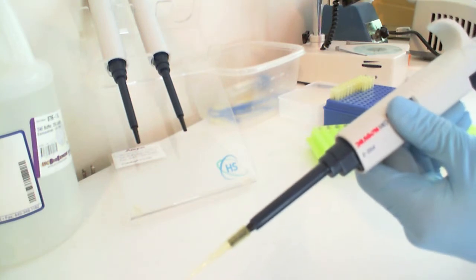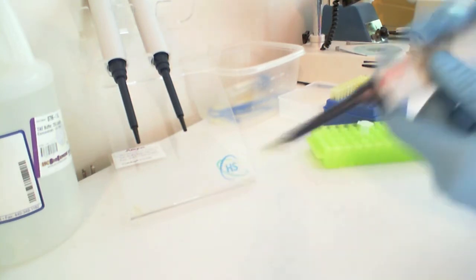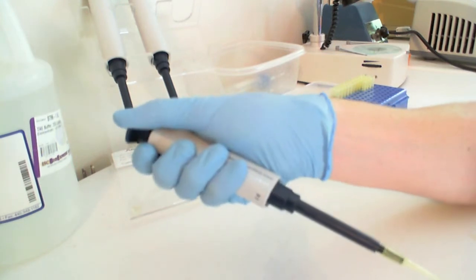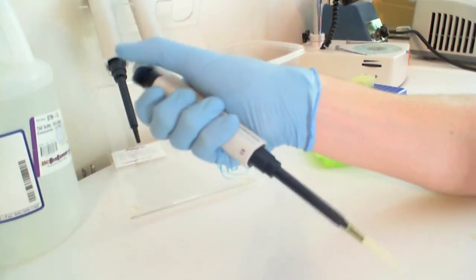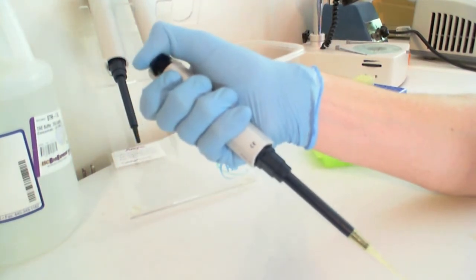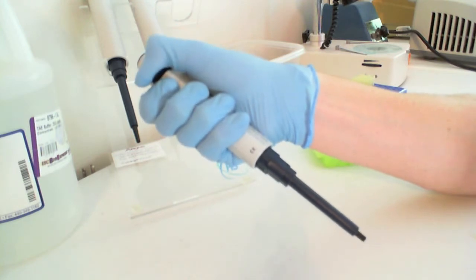So when you're done using one reagent, you're ready to change tips. Simply position your pipette over your waste receptacle and press on the end of the pipette, which ejects the tip.